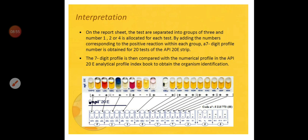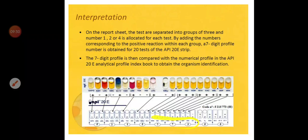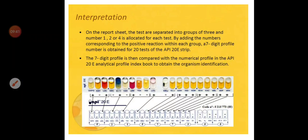If the first and second mini-kits in a group are negative but the third is positive, it scores two, giving that digit a value of two. Continuing this way across all twenty tests produces the seven-digit profile. For each Enterobacteriaceae member there is a specific digit profile from which we can make a diagnosis. This will also be covered in more detail in the practical labs.